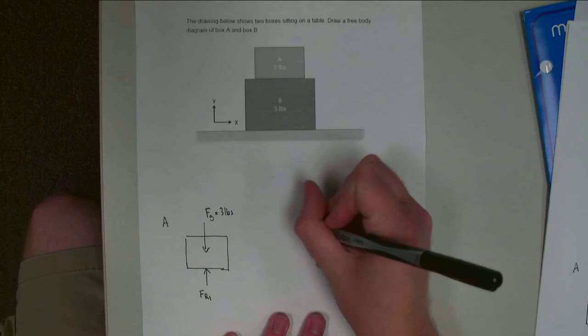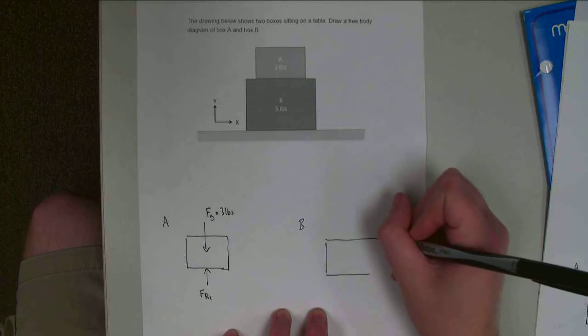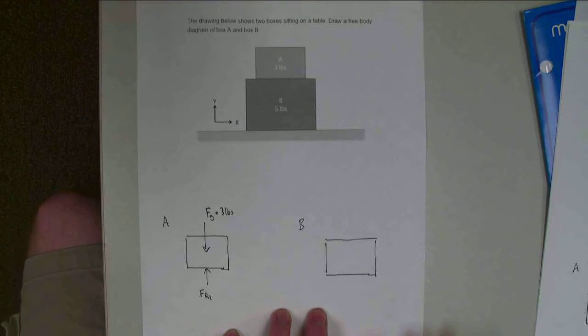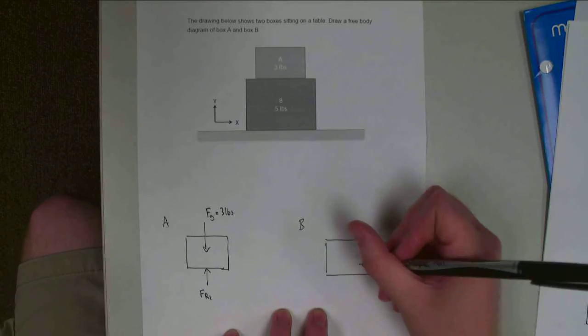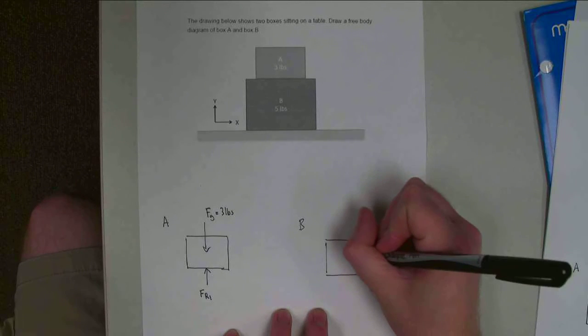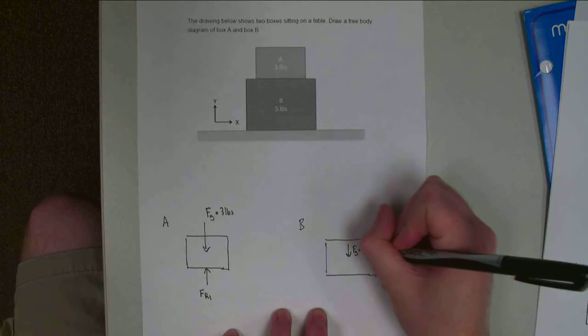Now let's draw box B. If we draw box B over here, we're going to have, again, a gravity force. It's got a weight of five pounds. So let's draw that acting down. FG equals five pounds.